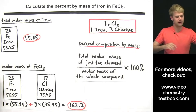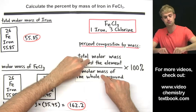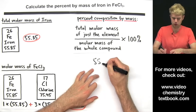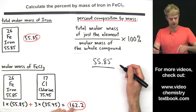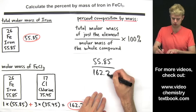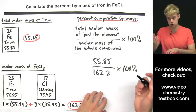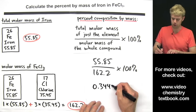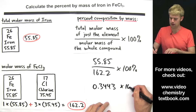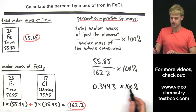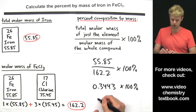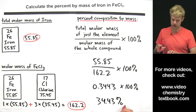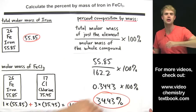Now we have the mass of just the iron (55.85) and the molar mass of the whole compound (162.2). Plugging into the equation: 55.85 / 162.2 × 100%. The first step gives 0.3443, rounded to four significant figures. Multiplying by 100% moves the decimal two spots right, giving 34.43% — the percent by mass of iron in FeCl₃.